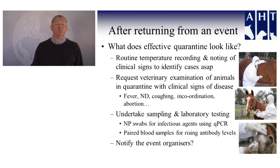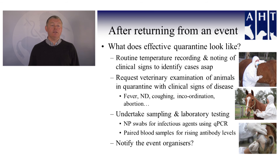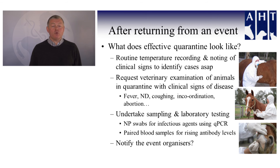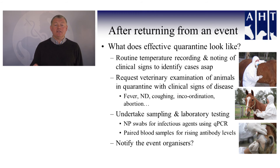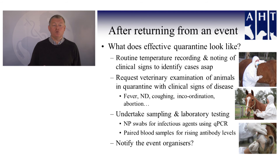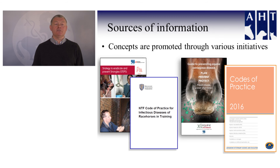Request veterinary examination of animals in quarantine if clinical signs appear — looking out for fever, raised temperature, nasal discharge, coughing, incoordination, and abortion. Undertake sampling and laboratory testing — taking swabs and using PCR to look for infectious agents. Take blood samples several weeks apart to look for rising antibodies that would indicate a horse has been infected. If you think your horse acquired an infection at an event, it is important to notify the event organisers — you may not be the only one, and tracing these infections arising from events can be really important in minimising the extent of outbreaks.